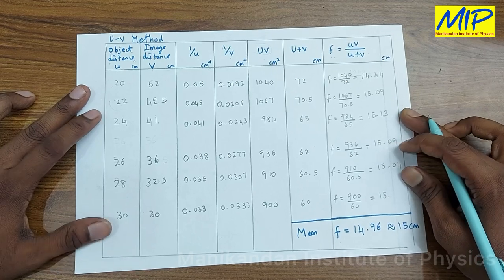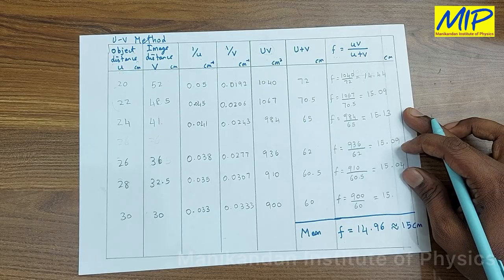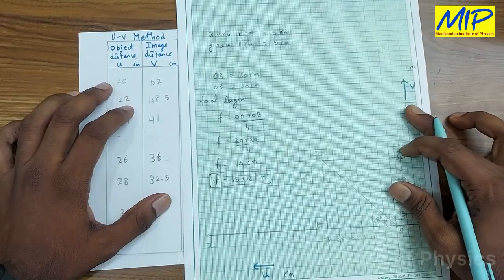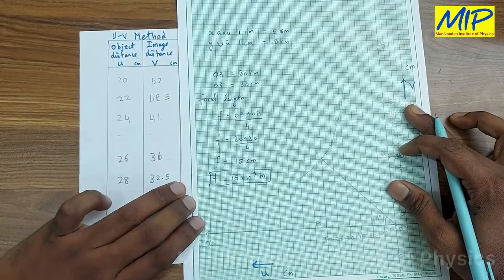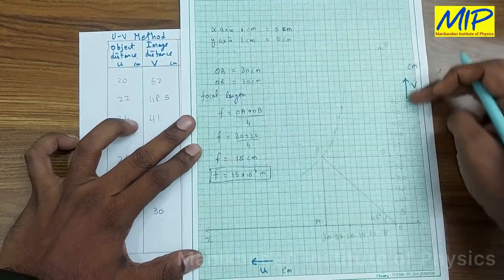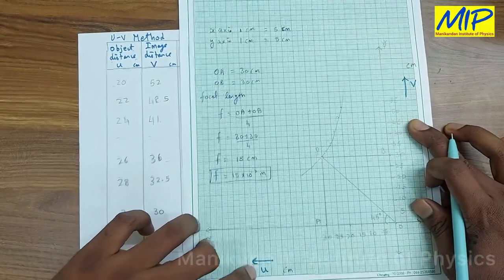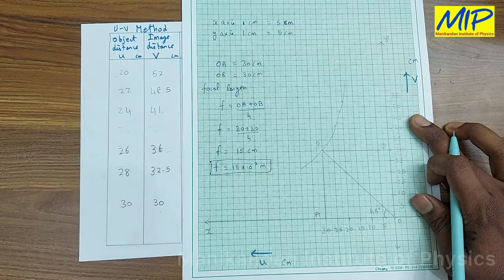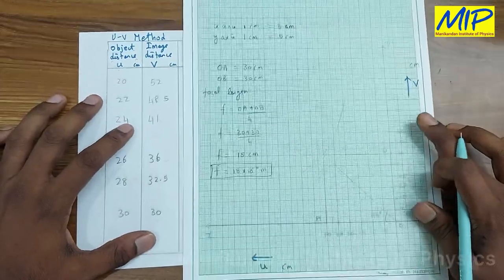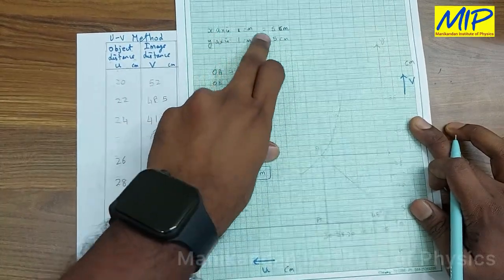Now I'll explain how to determine the focal length using the UV graph method. We plot a graph between V and U, with V along the y-axis and U along the x-axis. Since U is negative — as the object is on the left side of the lens — U is taken on the negative x-axis. I'll fix the scale: along the x-axis, 1 centimeter equals 5 centimeters.